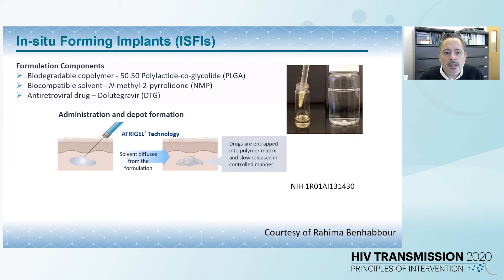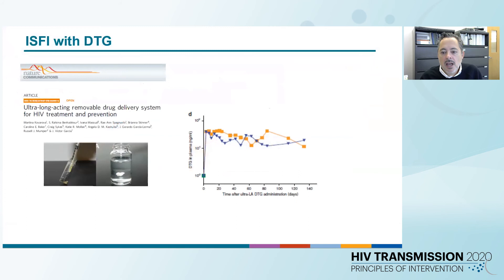More products are in the pipeline. These are NanoFormulated implants developed by the UNC group. These implants form a depot after administration and are slowly degraded, releasing antiretroviral drugs — a very interesting technology currently under evaluation. We've been collaborating with them and show that this drug delivery system is able to sustain plasma concentrations, in this case of dolutegravir, providing very sustained release.